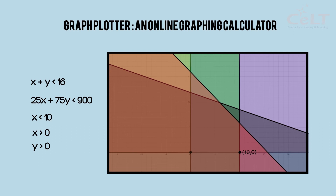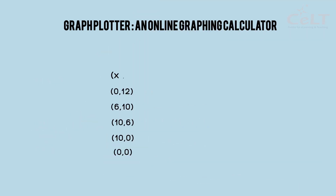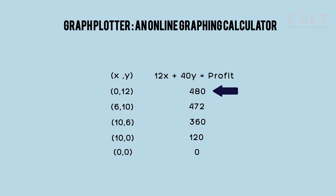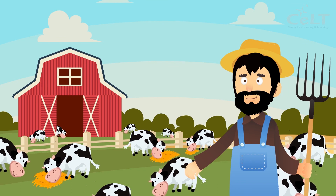We identify the points of the shaded region. Substituting these points into the maximization function, the highest profit that can be obtained is 480 ringgit. Mr. Abu, you can raise 12 cows to obtain the maximum profit.